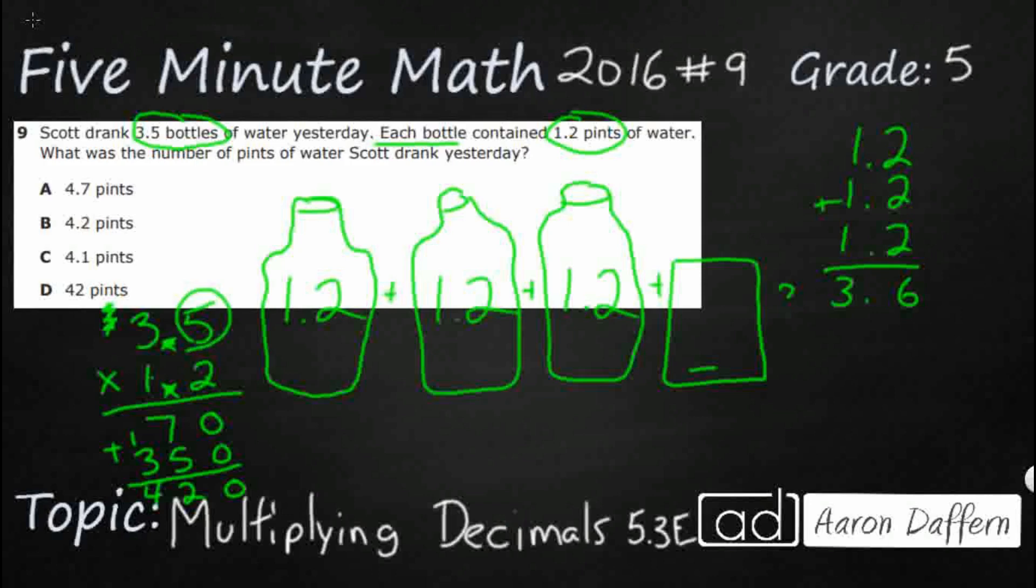How many digits are behind the decimal in 3.5? You've got 1. How many digits are behind the decimal in 1.2? You also have 1. So you have a total of two digits behind the decimal in your factors put together. So you need to make sure that there are a total of two digits in your product.